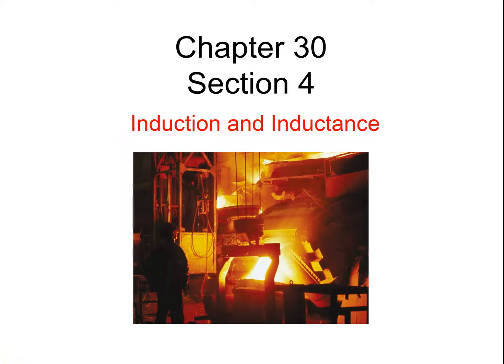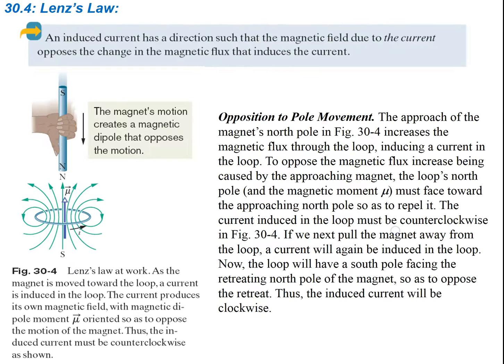We're continuing Chapter 30, covering Section 4, which is on Lenz's Law. Lenz's Law says that an induced current has a direction such that the magnetic field due to that current opposes the change in magnetic flux that induces the current.